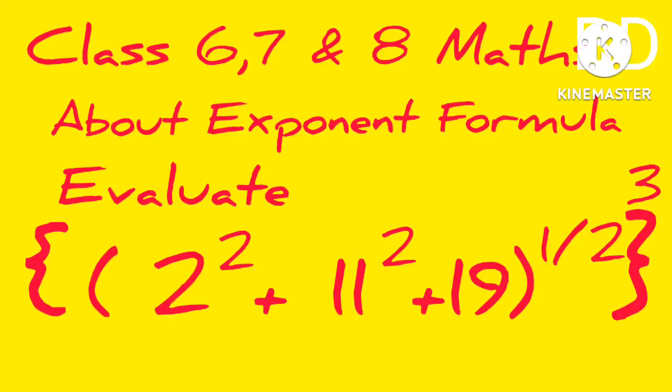121 plus 4 plus 19 equals 144, whole power 1 by 2. That means the square root of 144 equals 12.